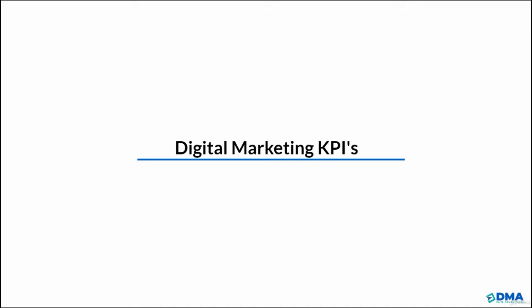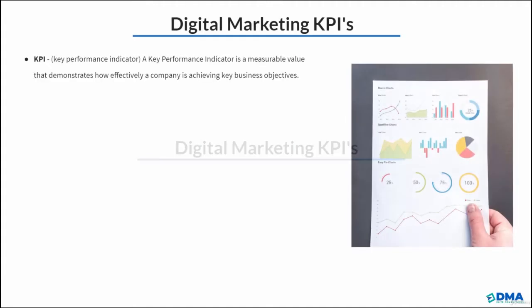In this video, we're going to cover the digital marketing KPIs. The KPIs are key performance indicators that essentially give us an understanding of how well our campaign is running. A KPI is a measurable value that demonstrates how effectively a company is achieving key business objectives. Since we're focusing on paid ads, this is where we're going to see various KPI metrics.